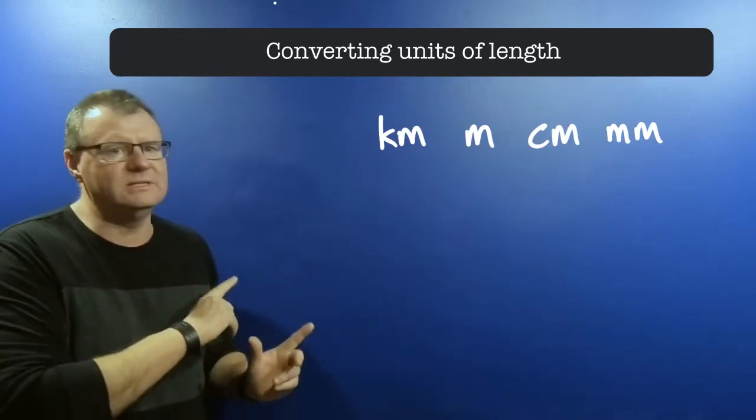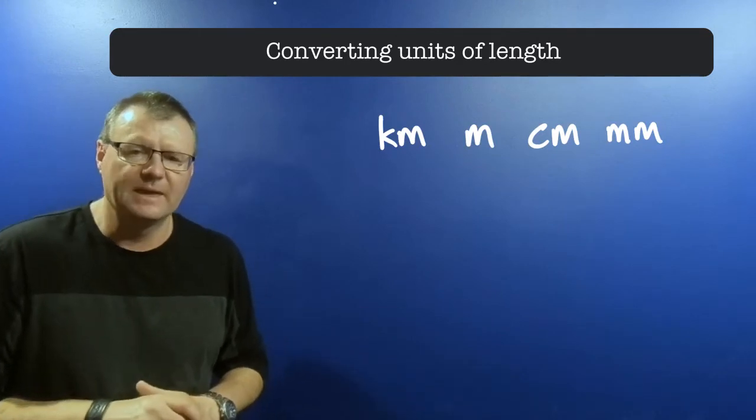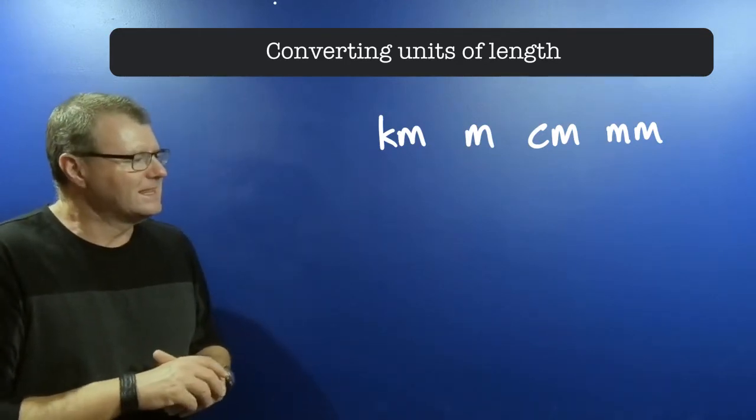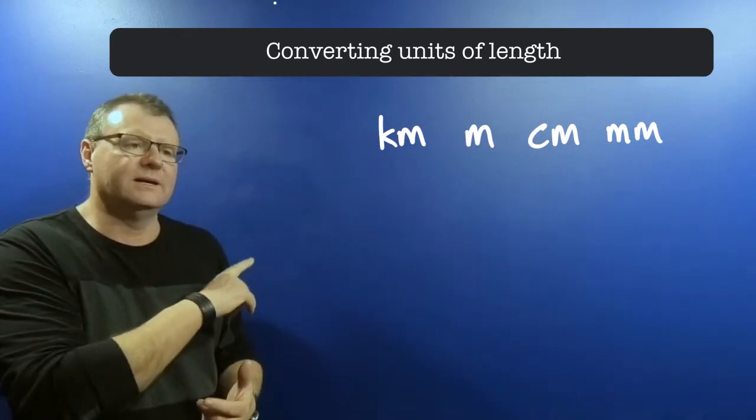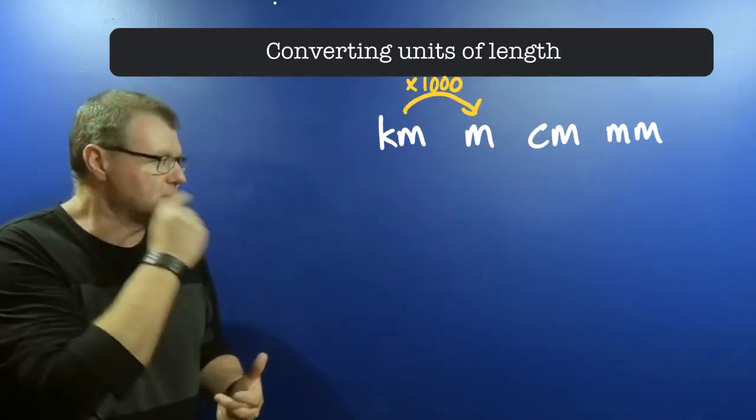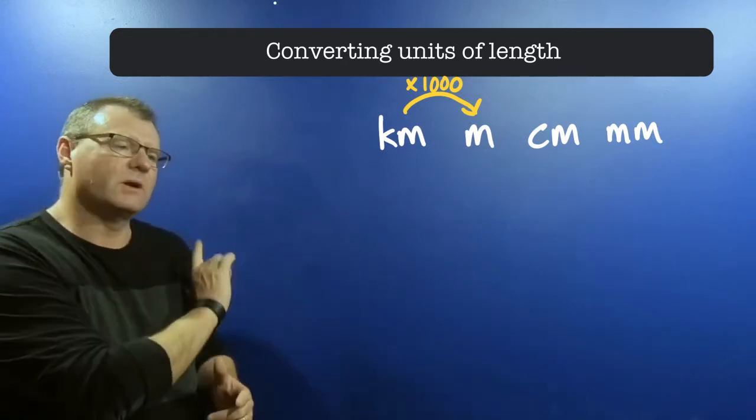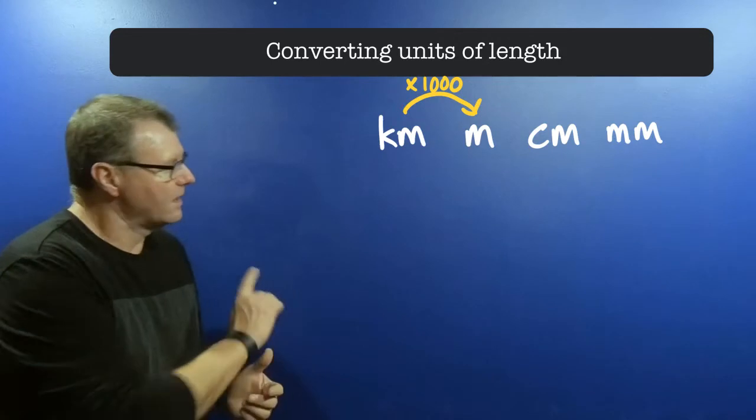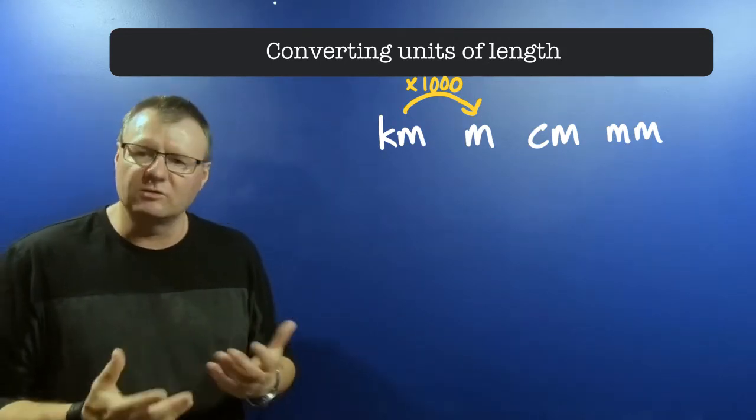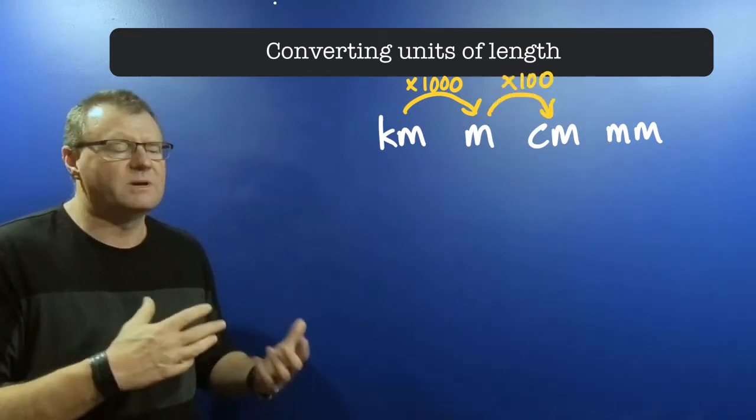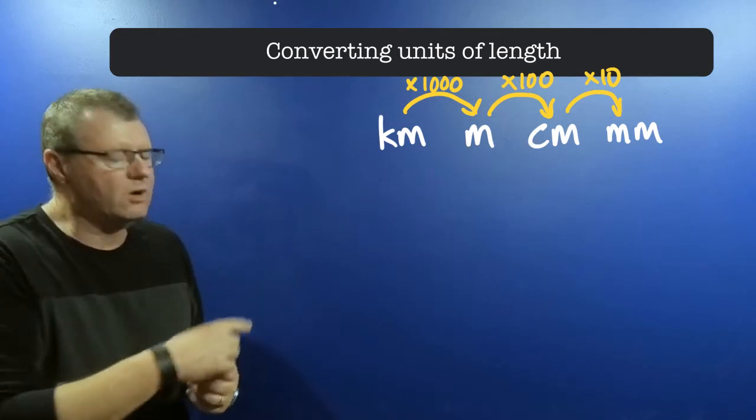We start with kilometers, meters, centimeters, and millimeters. There are 1,000 meters in a kilometer, so if I had one kilometer times that by 1,000, I get 1,000 meters. I'm going to put times 1,000 with arrows to show that going from kilometers to meters, I'm multiplying by 1,000. From meters to centimeters, multiply by 100, and from centimeters to millimeters, multiply by 10.